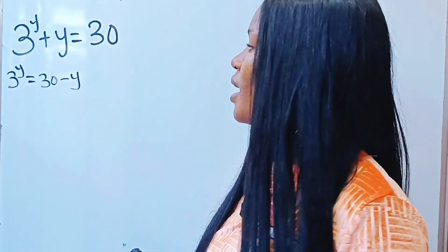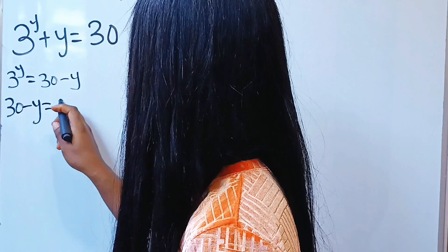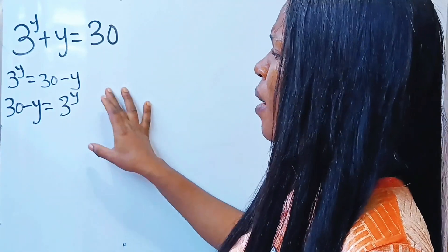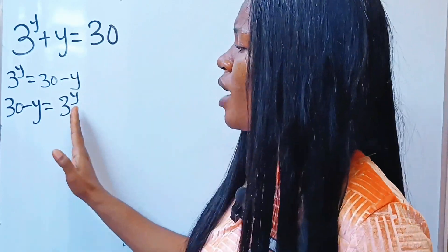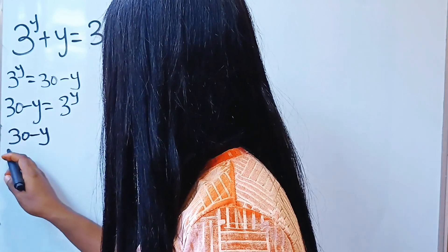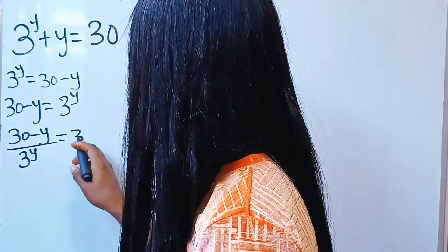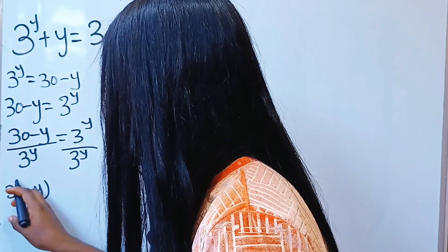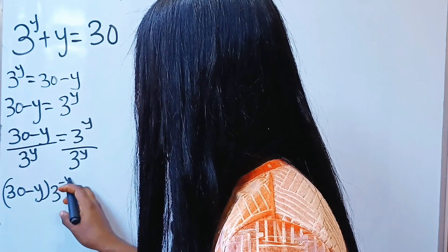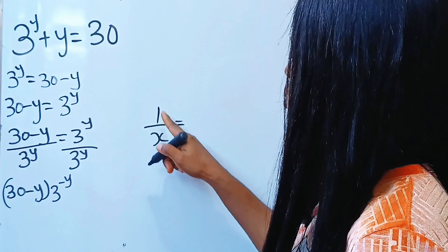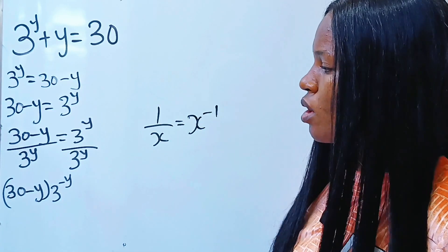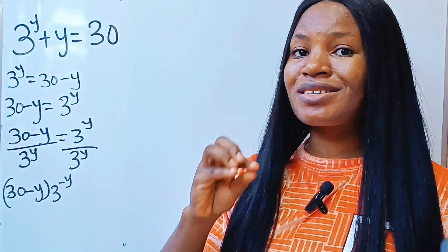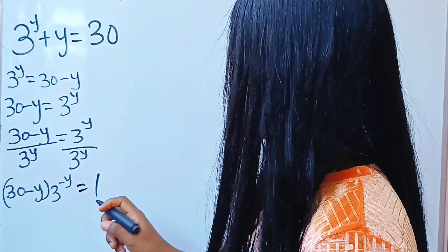Let me interchange that: 30 minus y is equal to 3 raised to the power of y. Now let's divide through by 3 to the power of y, so we have 30 minus y divided by 3^y equals 3^y divided by 3^y, which is 1. That gives us 30 minus y multiplied by 3 to the power of minus y equals 1, because 1 over 3^y becomes 3^(−y).